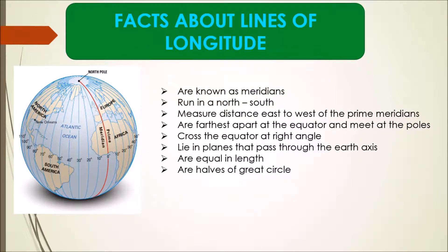Lines of longitude measure distance east to west of the prime meridian. They are farthest apart at the equator and meet at the poles. They cross the equator at right angles and lie in planes that pass through the Earth's axis.